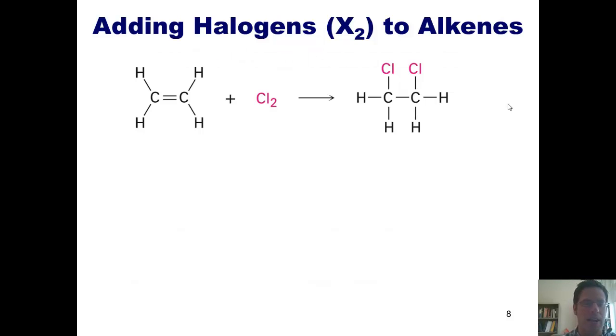This brings us to another reaction, adding halogens X₂ to alkenes. Now in this particular example, I've shown chlorine, but you could also do the same thing with bromine. You'll note then that if we take an alkene like this and react it with X₂, chlorine, bromine, or iodine, it will place one atom of each of these halogens onto each of the carbons that formerly had the double bond.